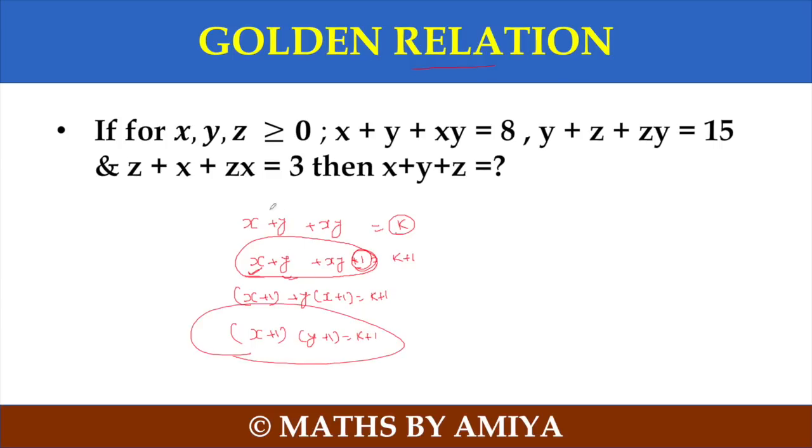So this is a golden relationship. If you have x plus y plus xy is equal to something, then you have x plus 1 into y plus 1 is equal to k plus 1. Then I can directly say x plus 1, y plus 1 is equal to 1 raise to 9. And you have said that it will be x plus 1 and 9 because you have two positive.